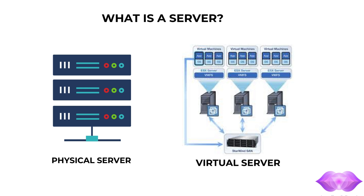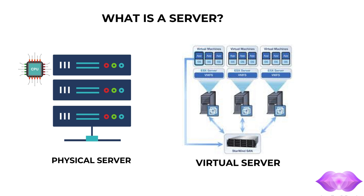Components of a physical server: CPU — the brain of the server that executes all instructions. High-performance CPUs such as Intel Xeon and AMD EPYC are optimized for multitasking and handling complex computations. RAM or memory is temporary storage for active data and applications. Servers typically have large amounts of RAM to handle multiple processes simultaneously.